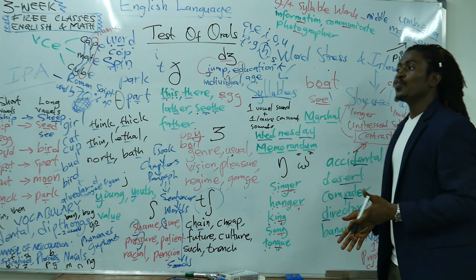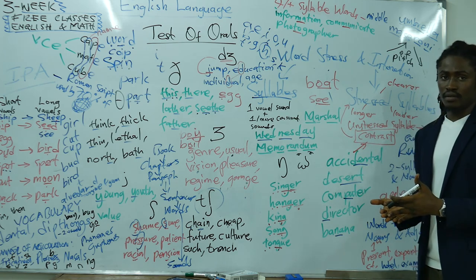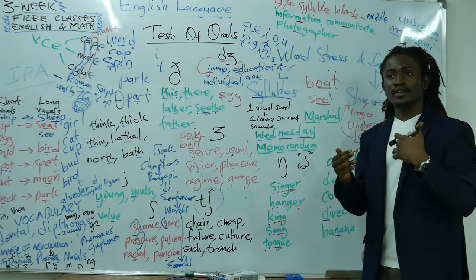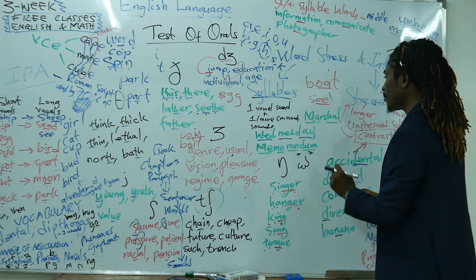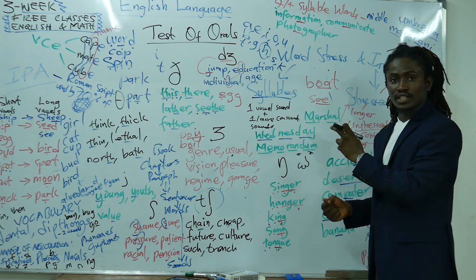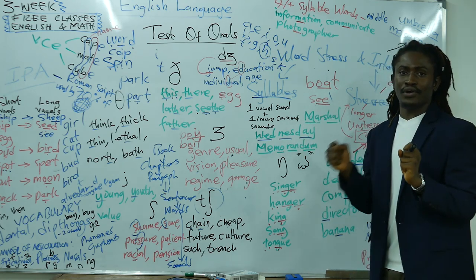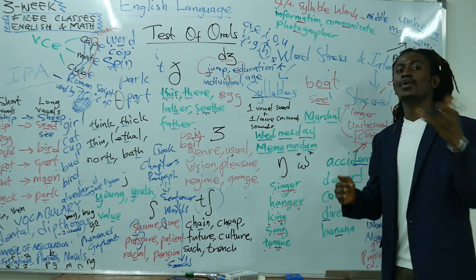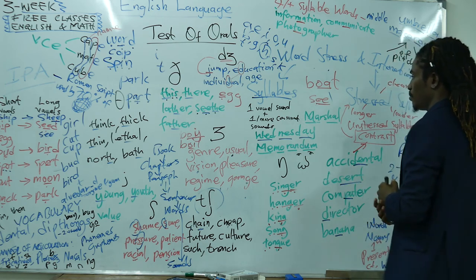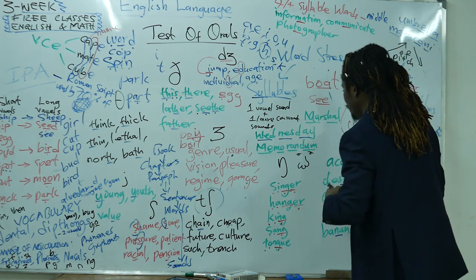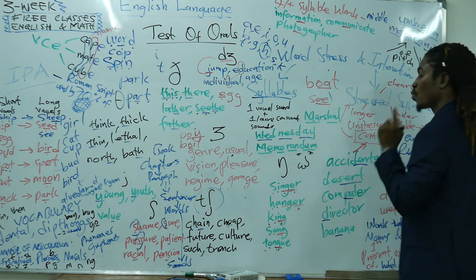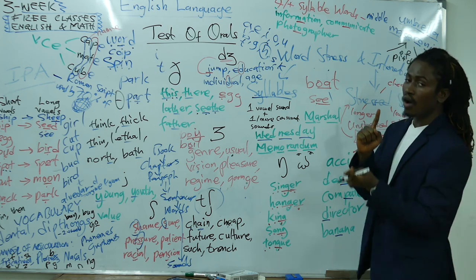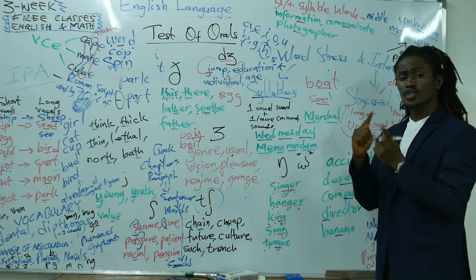One of those syllables is stressed, which is often one of the sources of difficulty in understanding native speakers. Because for them, the syllable that is stressed is the key — they can almost muffle the other syllables and people who know the language will still understand what they mean. A syllable is just a unit of a word that contains one vowel sound — only one vowel sound — and one or more consonant sounds.